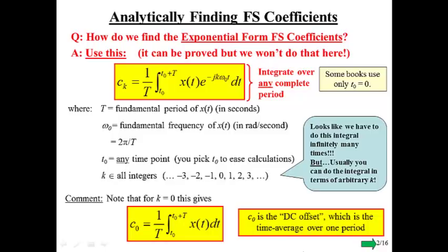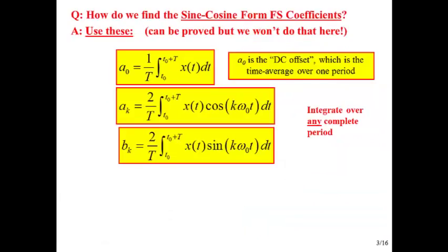So one note, when k is equal to 0, we get this exponential goes to 1 because e to the 0 is 1. So we get this simple result here, which basically just says c sub 0 is the average, the time average of the signal over one period. And we also call c sub 0 the DC offset of the signal.